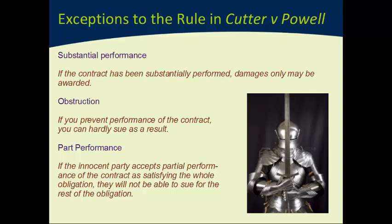Planche sued and obtained what's called a quantum meruit — a payment for effort that you've put in. The court said he'd done about half of the effort, so they awarded him about half of what he should have been paid — 50 pounds out of 100 pounds. The bottom line from Planche v Colburn is: if you are the cause of someone not being able to complete their obligation, then you can't sue them as a result, and you can't really avoid paying them at least some of your obligation.